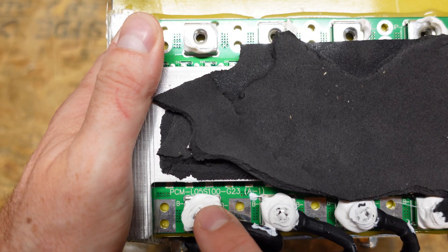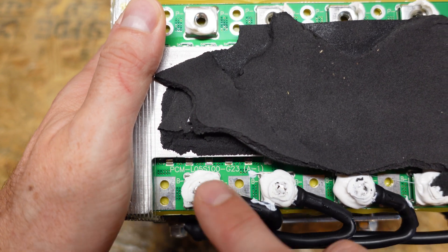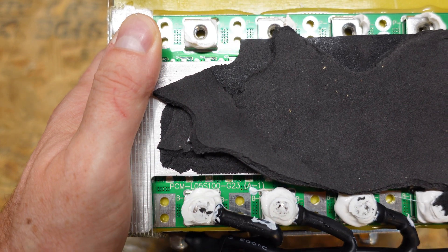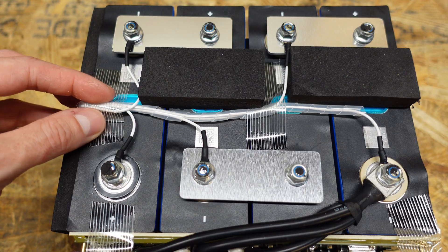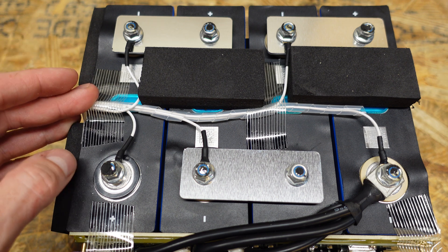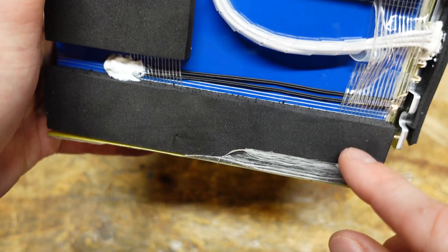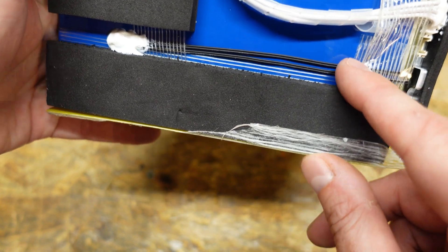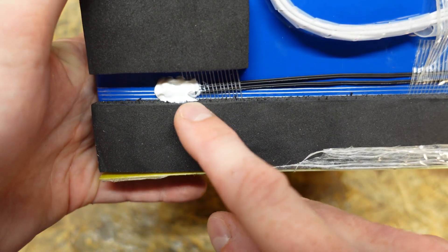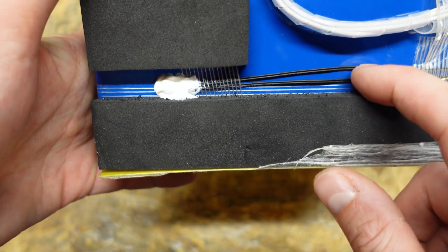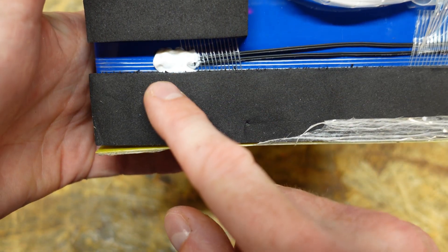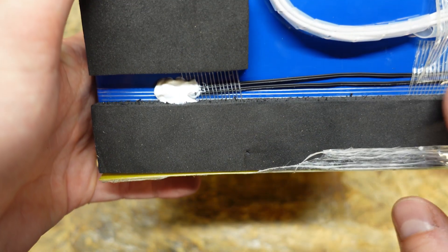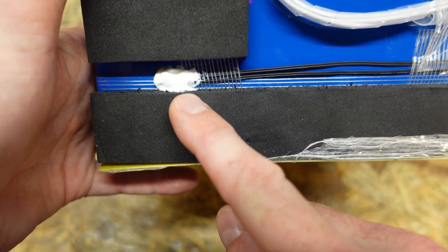This is a very similar BMS to some of the other batteries they use. It's model number PCML05S100-G23. The balance leads are nicely protected with the same type of spiral wrap as the other battery. This BMS does come with two temperature sensors. Both temperature sensors run to the side of the battery and are under the same piece of silicone. I don't know why you would run two temperature sensors that way. You could put one temperature sensor on each side of the battery or one on the top of the battery. But no, they have those going to the exact same point of the battery.